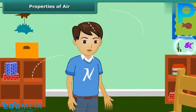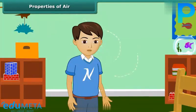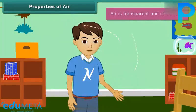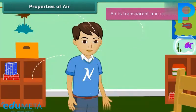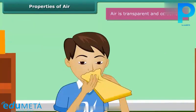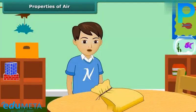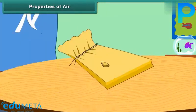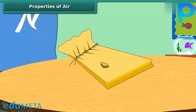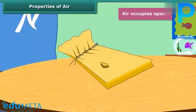We all know that there is air around us. Can you see the air? No, because air is transparent and colorless. Take a paper bag, blow air into it and seal its mouth. Does the bag appear bloated? Now make a hole in the bag. The bag shrinks in size and finally becomes flat. This is because the air inside the bag has escaped through the hole. This activity shows that air occupies space.